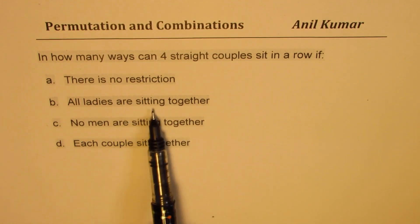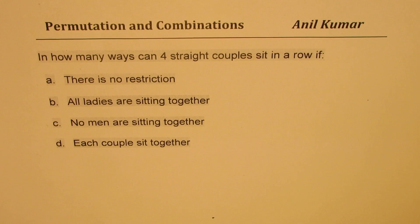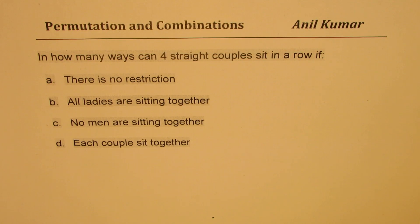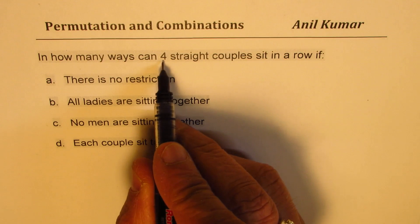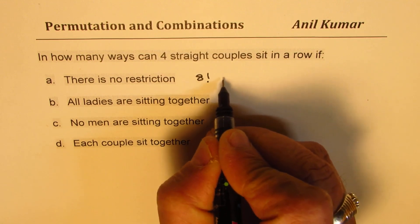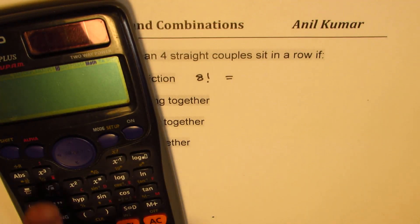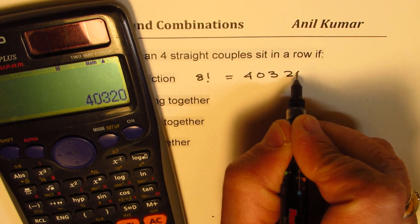The four cases are: no restriction; all ladies sitting together; no men sitting together; and each couple sitting together. For the very first one — no restrictions — 4 straight couples means there are 8 persons, so the answer is simply 8 factorial, which is 40,320.